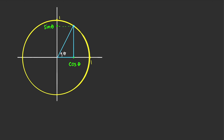Now, if we consider a sector of radius cosine theta with central angle equal to theta, and if you recall the area of a sector: for a circle with radius r and central angle theta, the area is equal to one-half theta r squared, where theta is measured in radians.